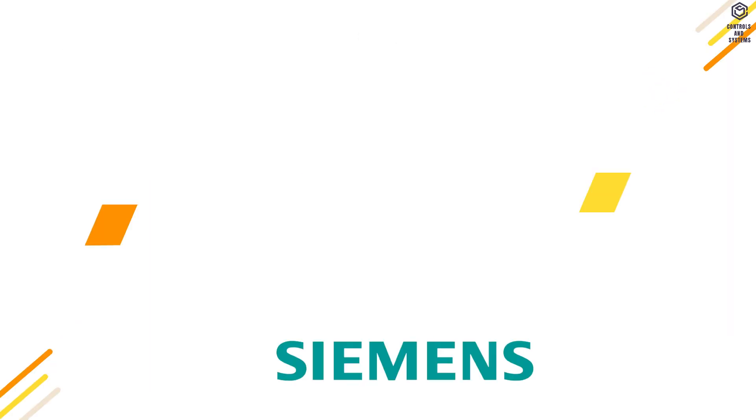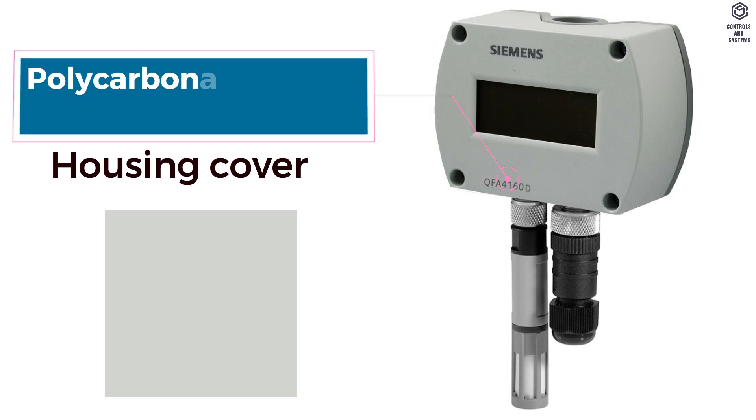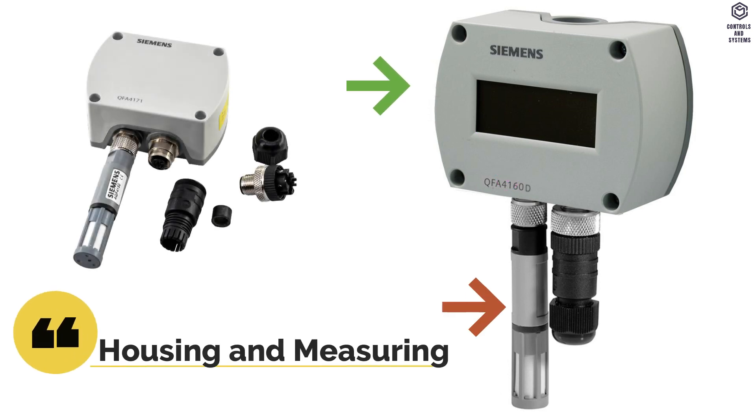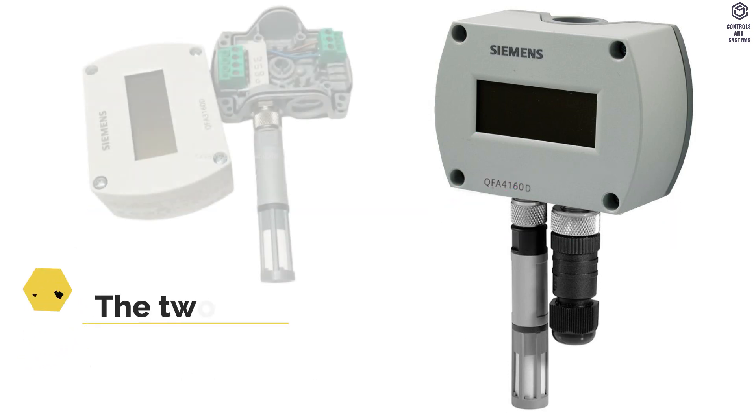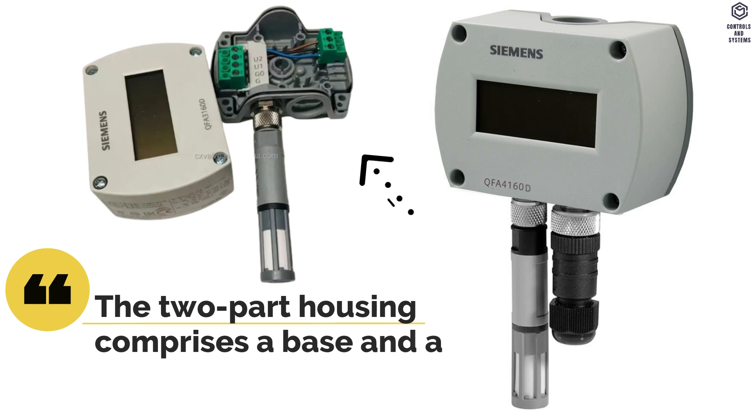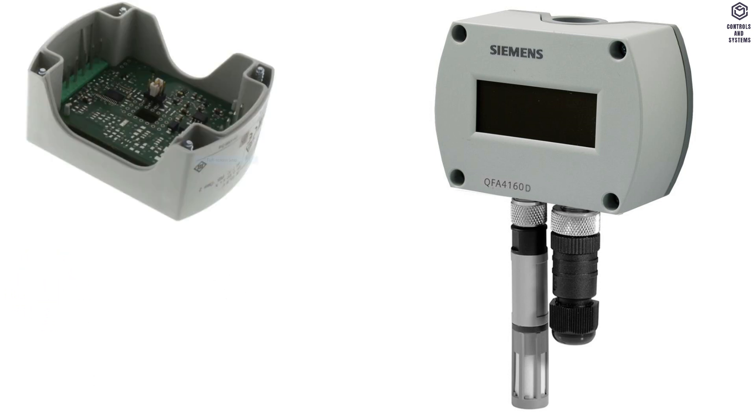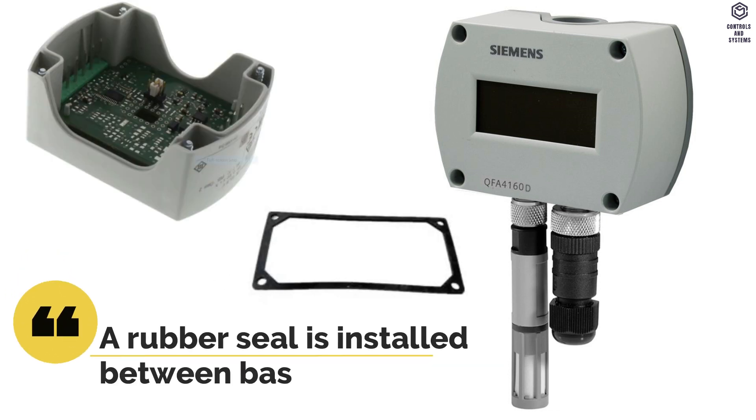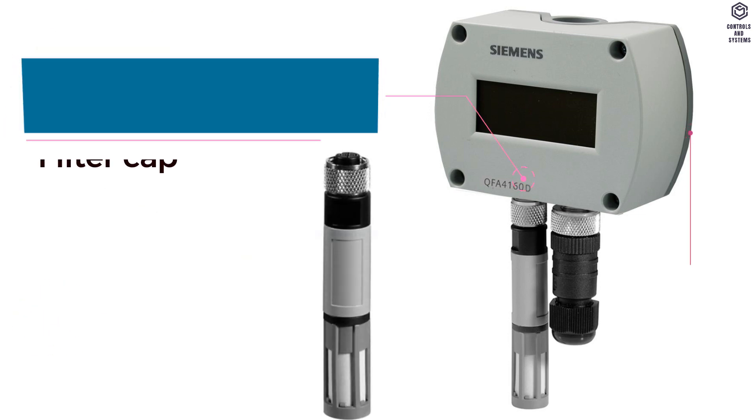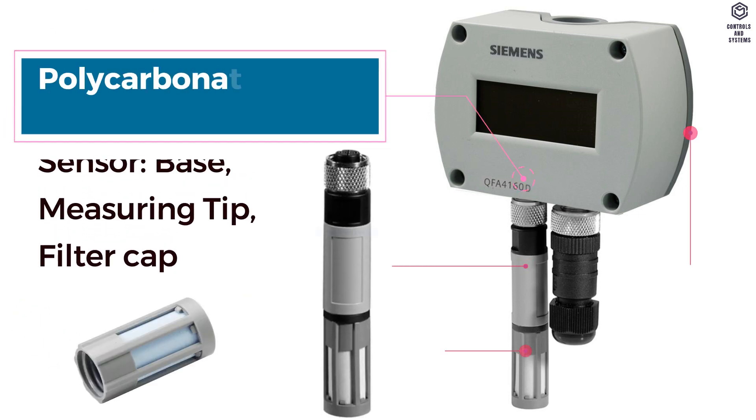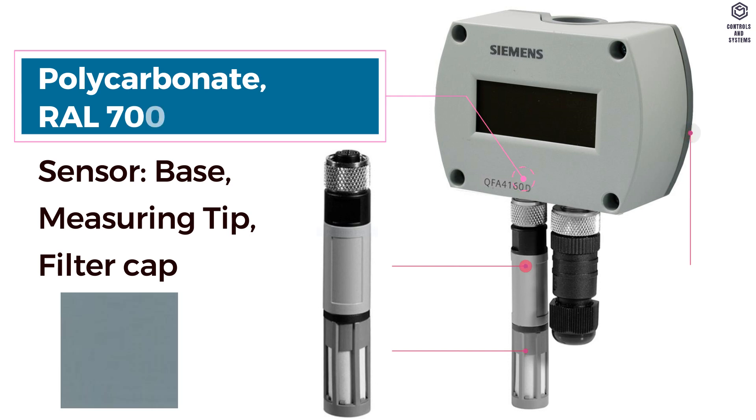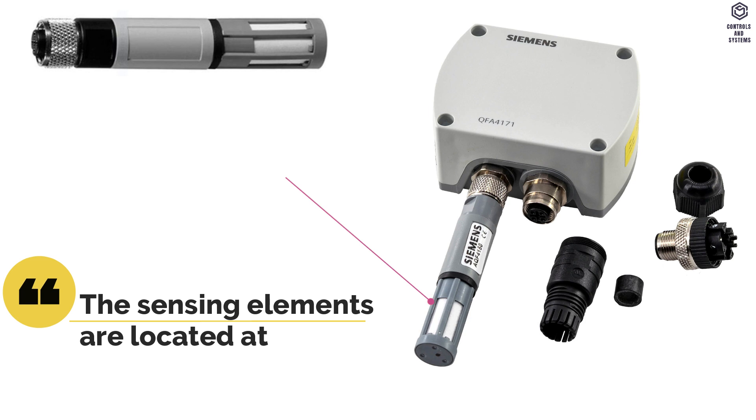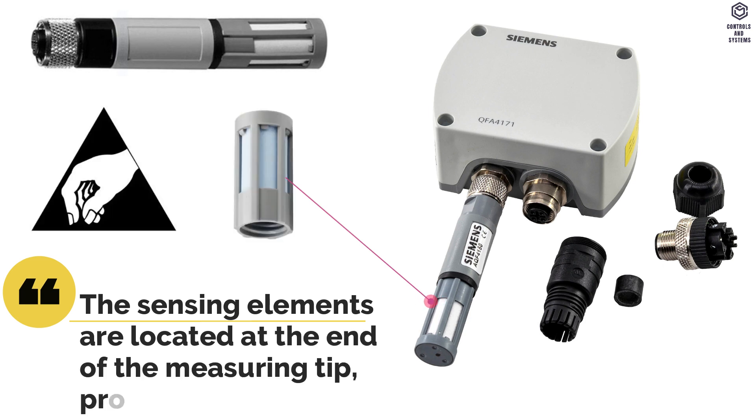Material Data. Housing cover is polycarbonate RAL 7035 light gray. Housing and measuring tip are screwed together. The two-part housing comprises a base and a screwed removable cover. A rubber seal is installed between base and cover. Sensor base, measuring tip, and filter cap is polycarbonate RAL 7001 silver gray. The sensing elements are located at the end of the measuring tip, protected by a screw-on filter cap.